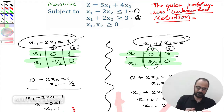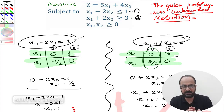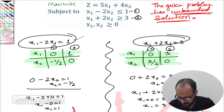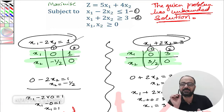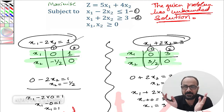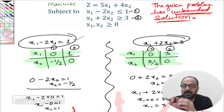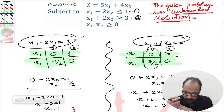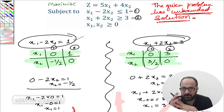For Z minimize it gave a proper solution in the previous video; for Z maximize it gives an unbounded solution. This is a special case of linear programming. In linear programming we have certain special cases: an unbounded solution like this one, a no-solution case, and cases with an infinite number of solutions — these are special cases of the linear programming graphical method.